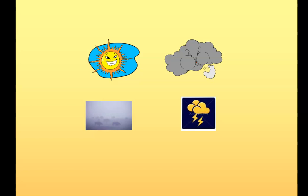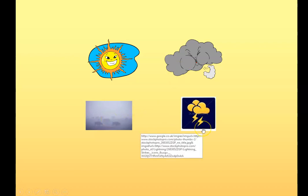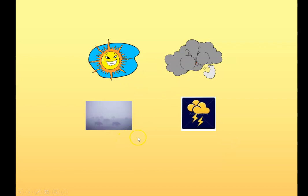These phrases all had one word at the beginning that was the same each time — c'è. C'è usually means 'there is', so while we say 'it is sunny', in Italian they say 'there is sun'. C'è il sole, c'è il vento, c'è la nebbia, c'è un temporale.